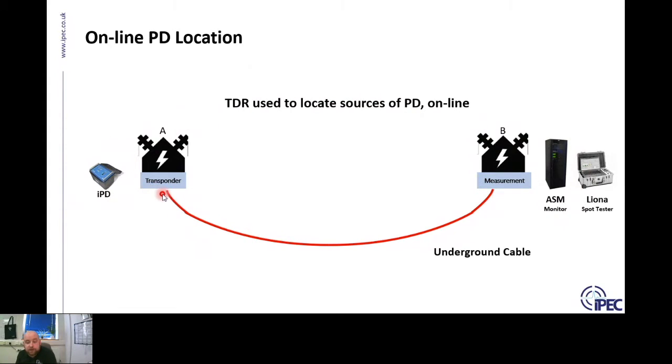When we want to do an online location, on the other end of the circuit we install the HFCT in the same way that I mentioned earlier in the presentation, and we connect it to a transponder unit. The IPEC transponder unit is called the IPD, the Impulse PD Device. The transponder unit is connected to the other end of the cable, and on the local end we can either use our permanent monitoring system or the Leona spot tester by Bauer.